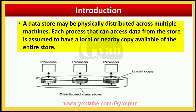Introduction: A data store may be physically distributed across multiple machines. Each process that can access data from the store is assumed to have a local or nearby copy of the entire store available, so that you can access the data directly from there.